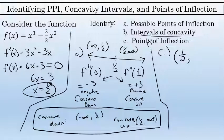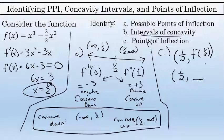The point of inflection here has an x coordinate of 1 half, and the y coordinate would be the result of substituting 1 half into the original function. The y coordinate is 1 half to the third power minus 3 halves times 1 half squared, which equals negative 1 fourth. This is a point of inflection on the function f of x equals x to the third minus 3 halves x squared.